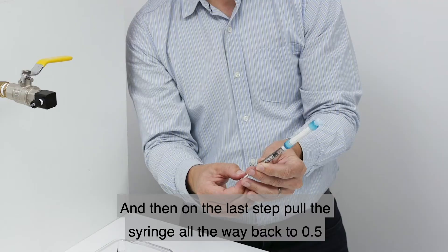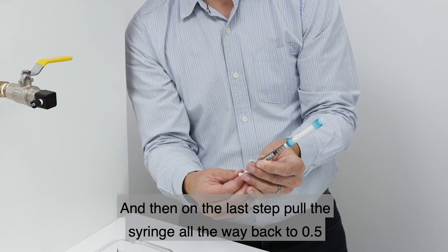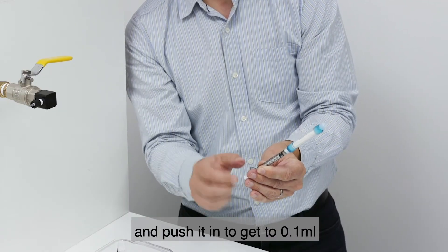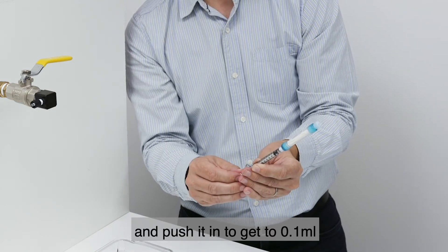And then on the last step, pull the syringe all the way back to the 0.5 and then push it in to get to your 0.1 milliliter.